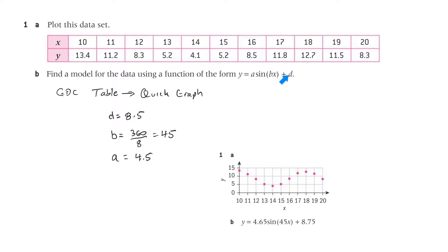d is the vertical shift, b here is 360 divided by the period and I estimated the period, and a is the amplitude. Now that's pretty close to the answers in the book, and that's from the back of the book, and that's there. So they're pretty close.